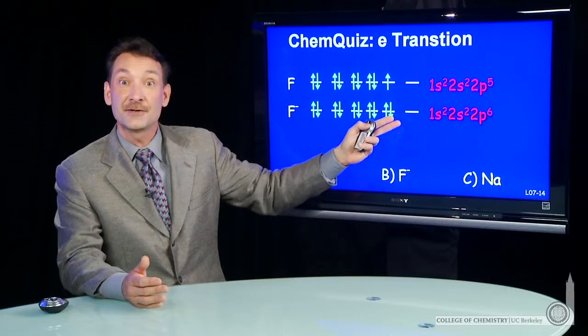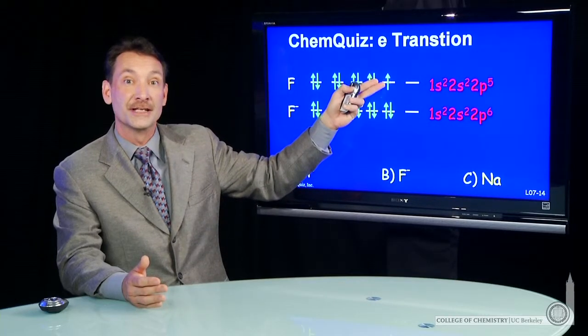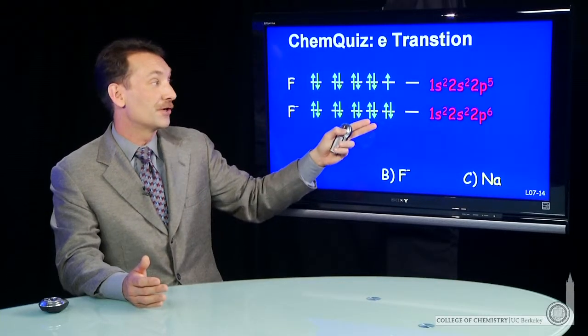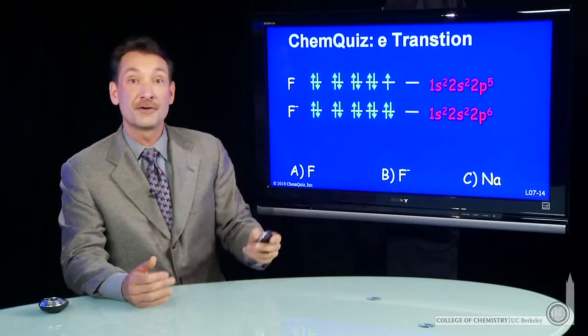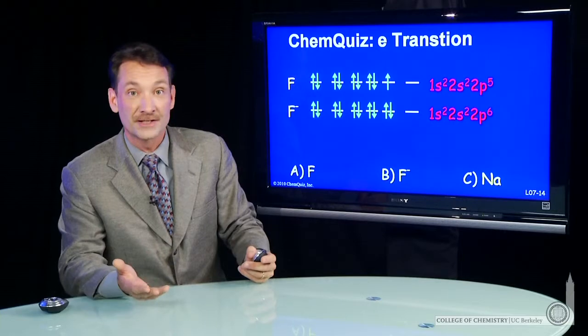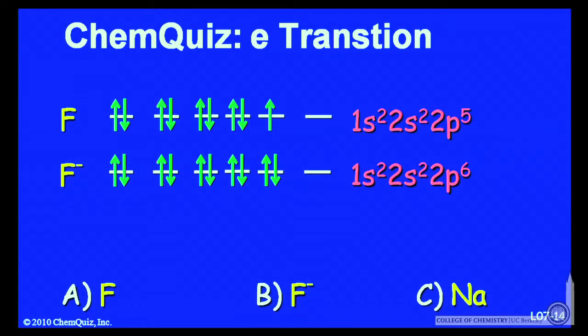Fluorine minus has an extra electron, one more electron than fluorine. So it has electronic configuration 1s²2s²2p⁶. The extra electron follows Hund's rule and the Pauli exclusion principle and fills principal quantum level 2.